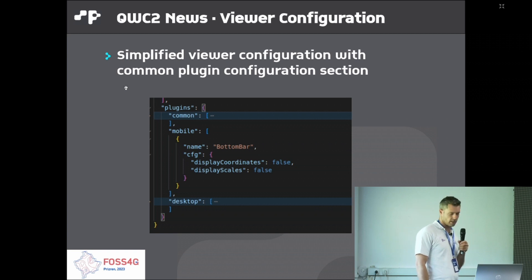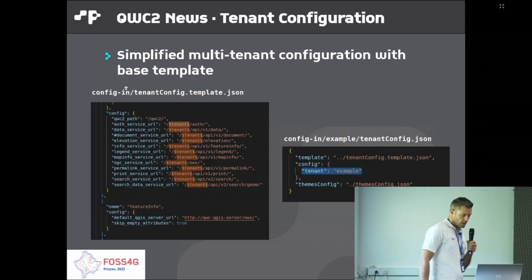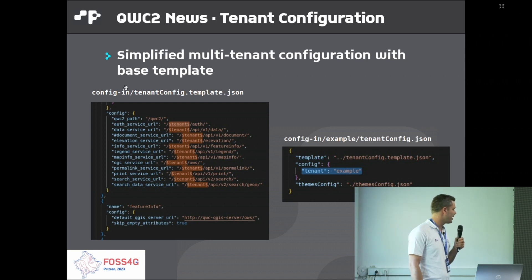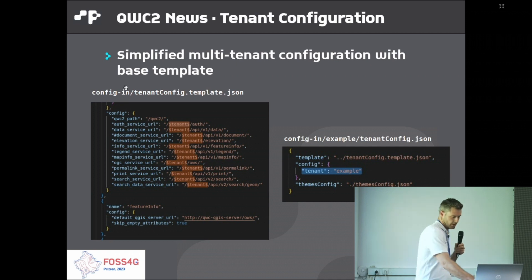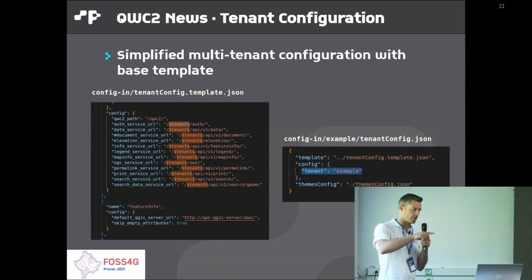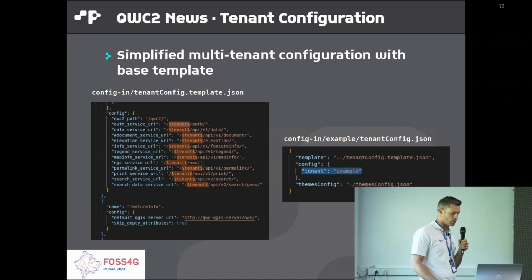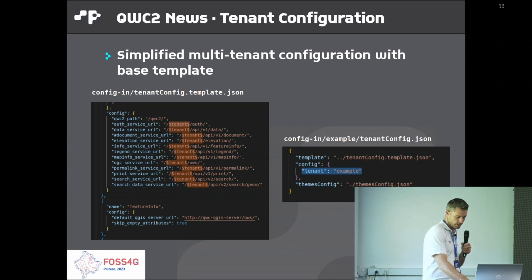This saves a lot of space, lines of code, and prevents many mistakes. For multi-tenant environments, you can now define a tenant config template that uses a $tenant$ variable as a placeholder, and then reference this file from tenants instead of replicating the entire configuration. Many times you just have one base configuration and selectively extend or override what you need in the actual tenant config.